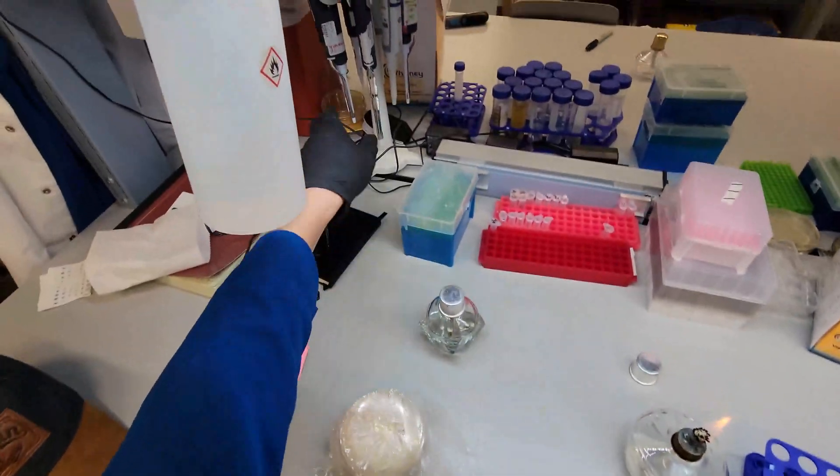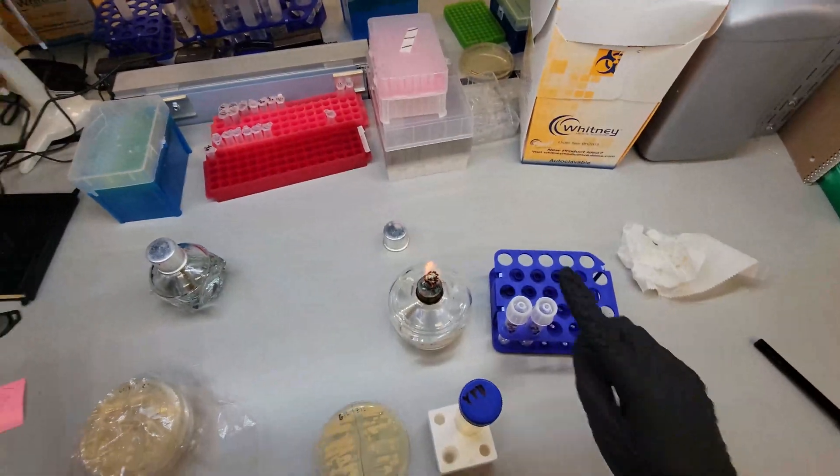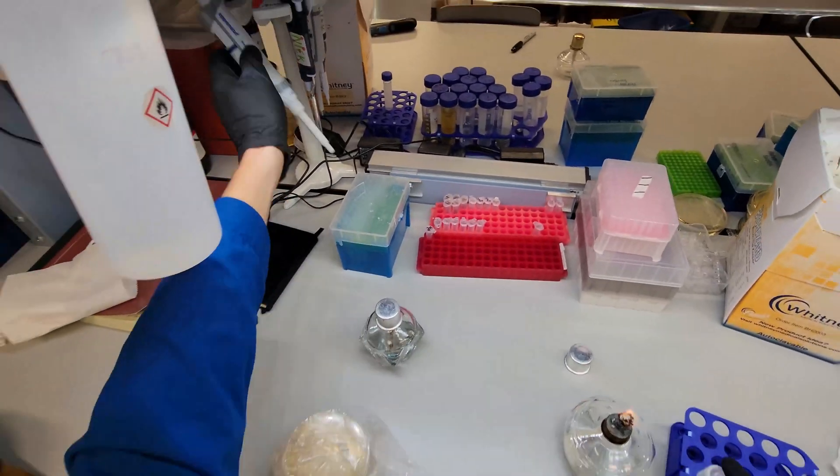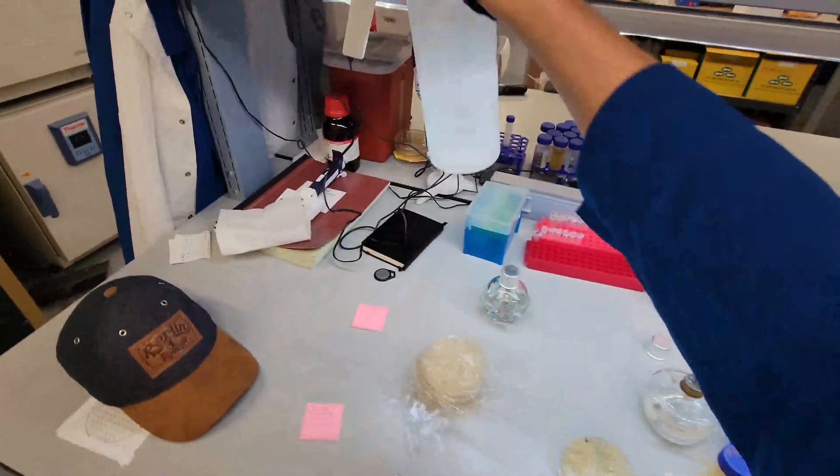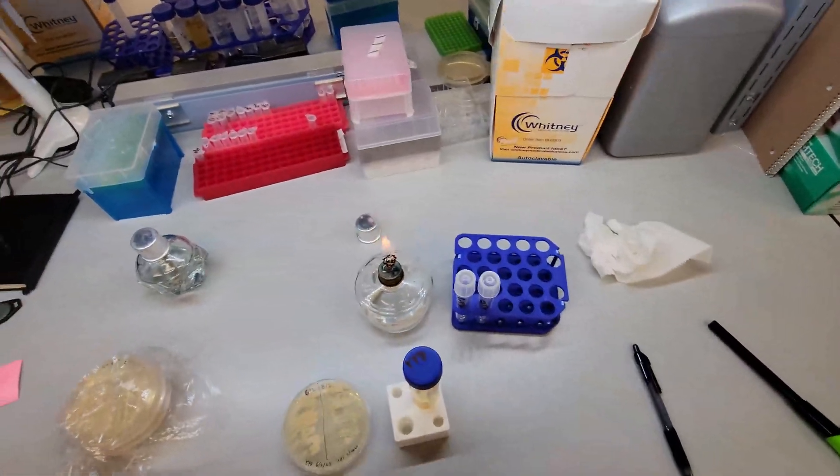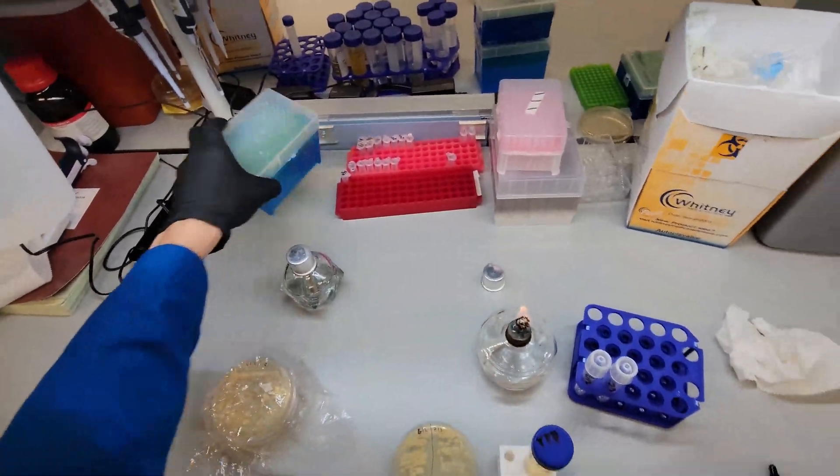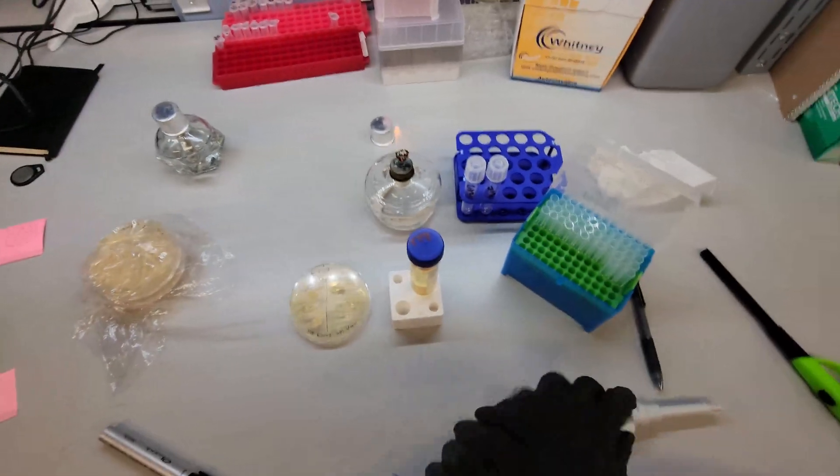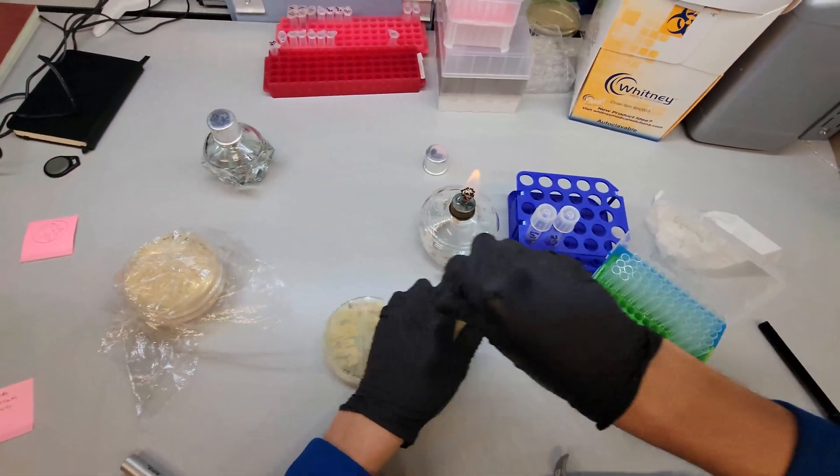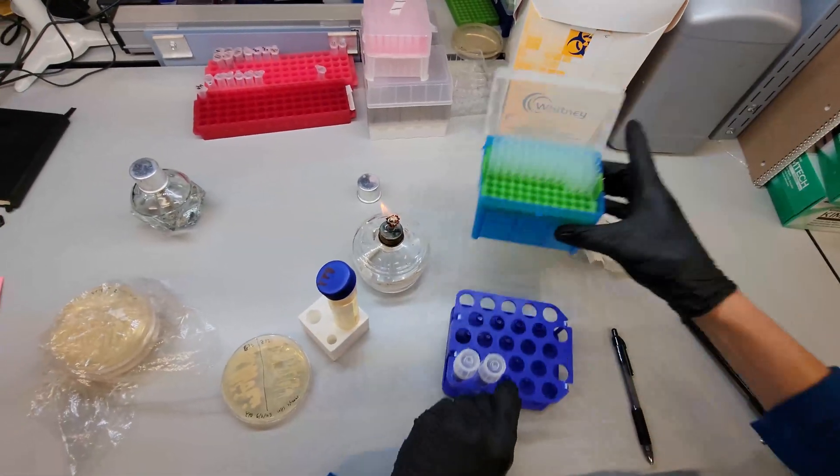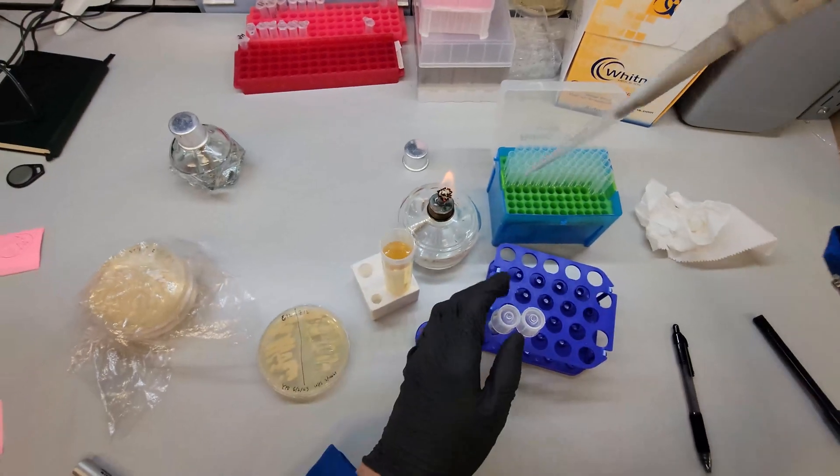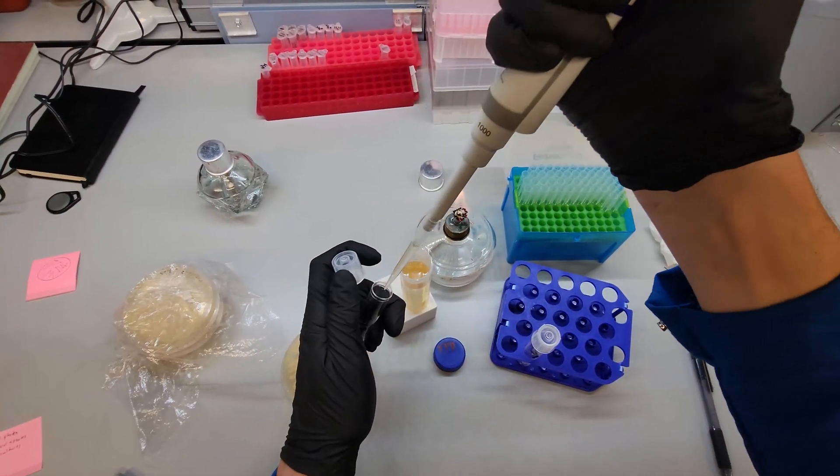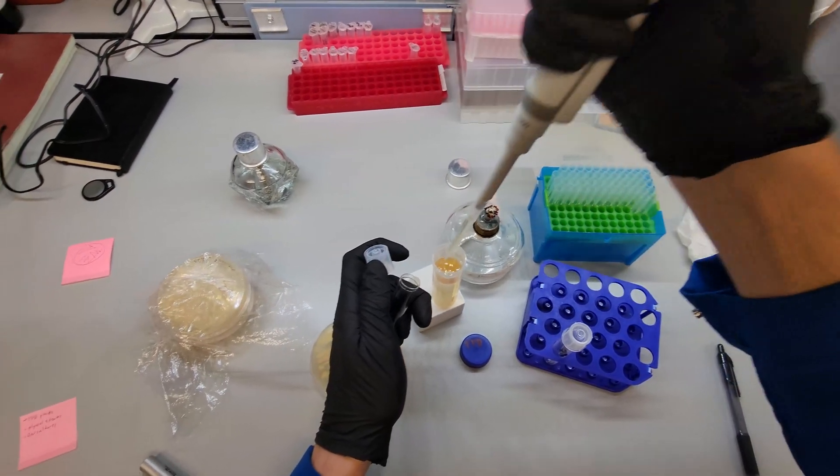Grab my little holder there. And usually in these 14 milliliter tubes, you want two milliliters of culture. So here's our one mil pipette. I'm gonna spray that down too, just because I'm paranoid. And here are our tips. Open this up. Just get two mils. One, two.